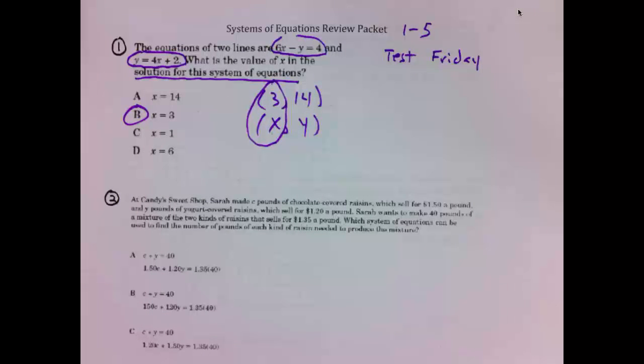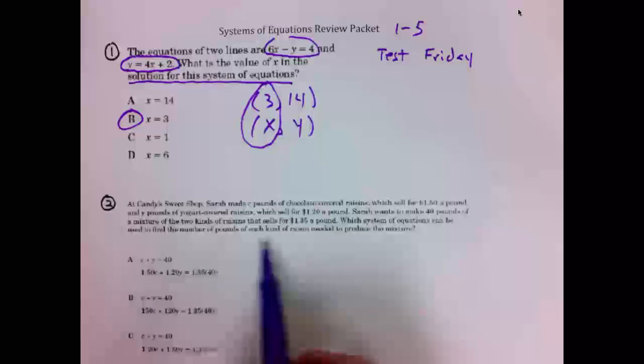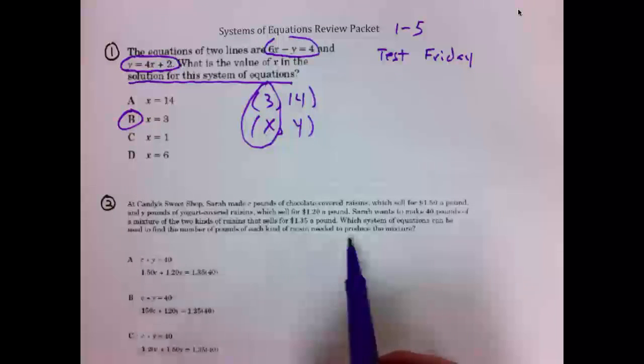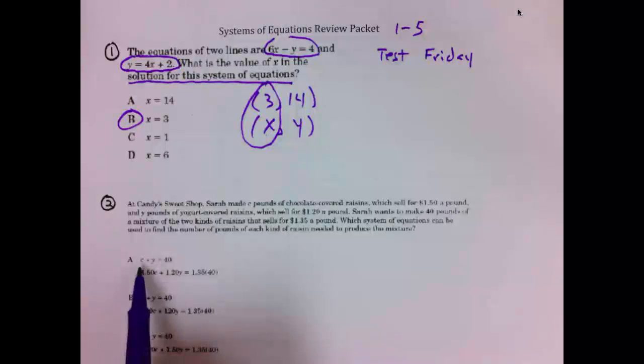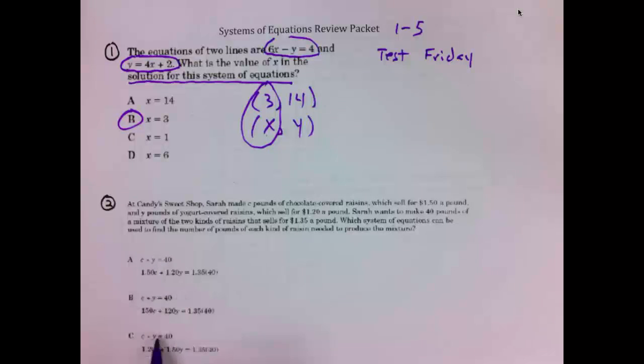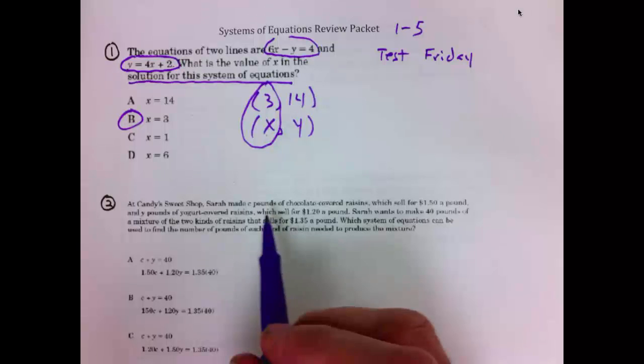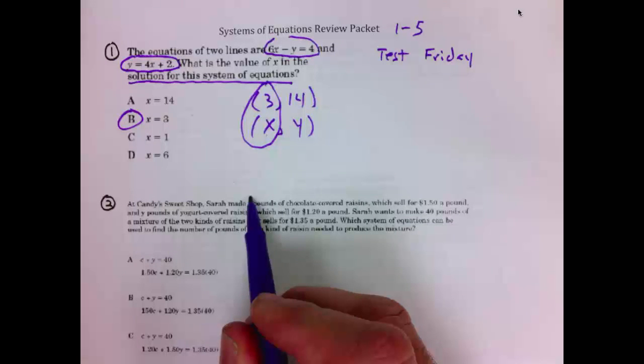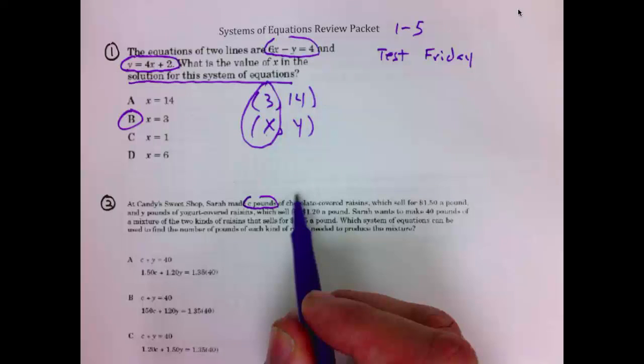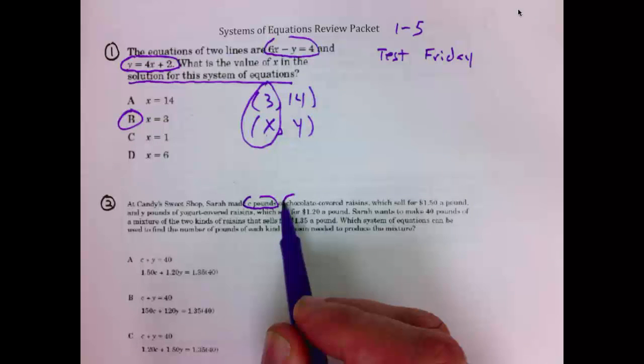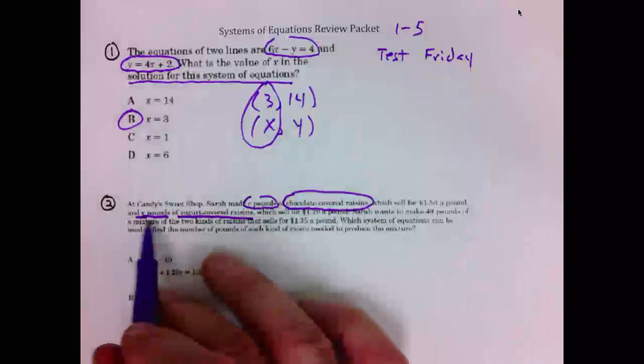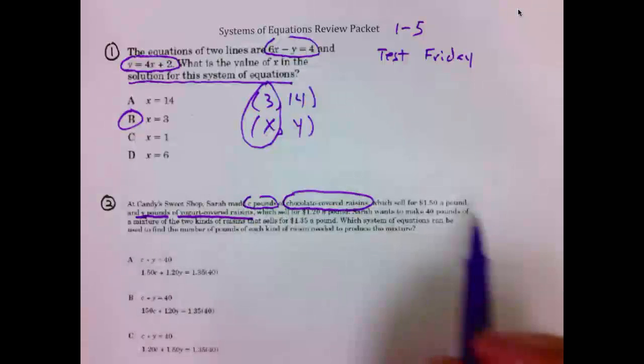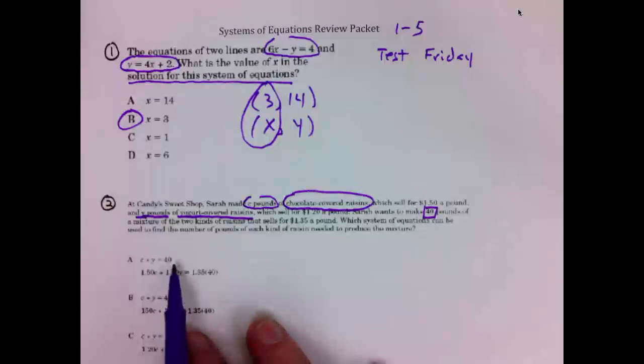Number 2, getting to the question sentence, which system can be used to find the number of pounds of each kind of raisin needed to produce the mixture? Looking at the answer choices, we see they all say c plus y is 40. So we know that we are going to have c plus y is 40. That is, c is the pounds of chocolate covered raisins. And y is the pounds of yogurt covered. So y is yogurt covered, c is chocolate covered, together they are 40.